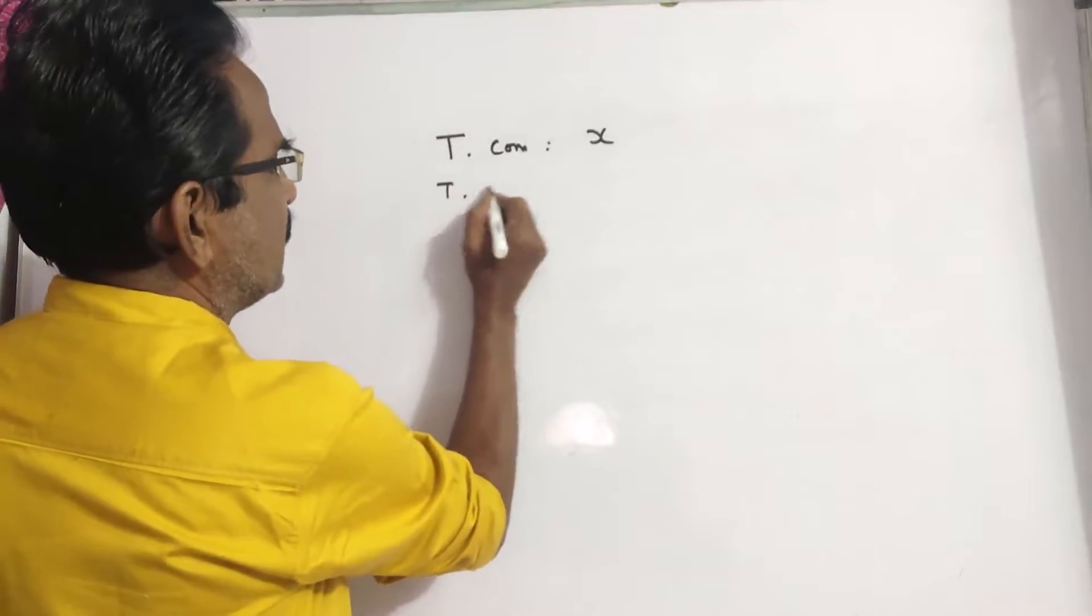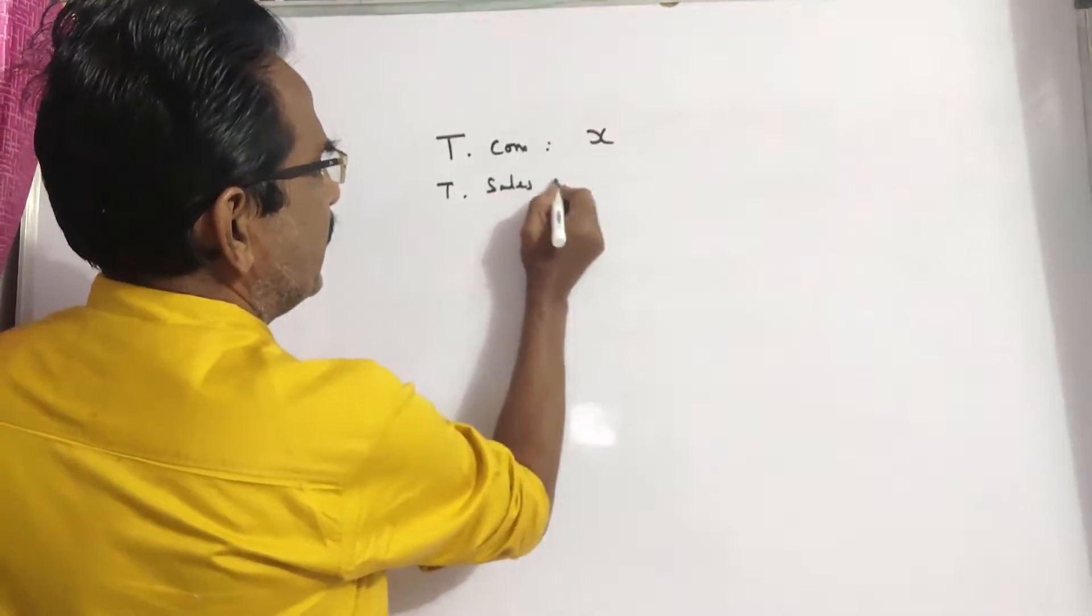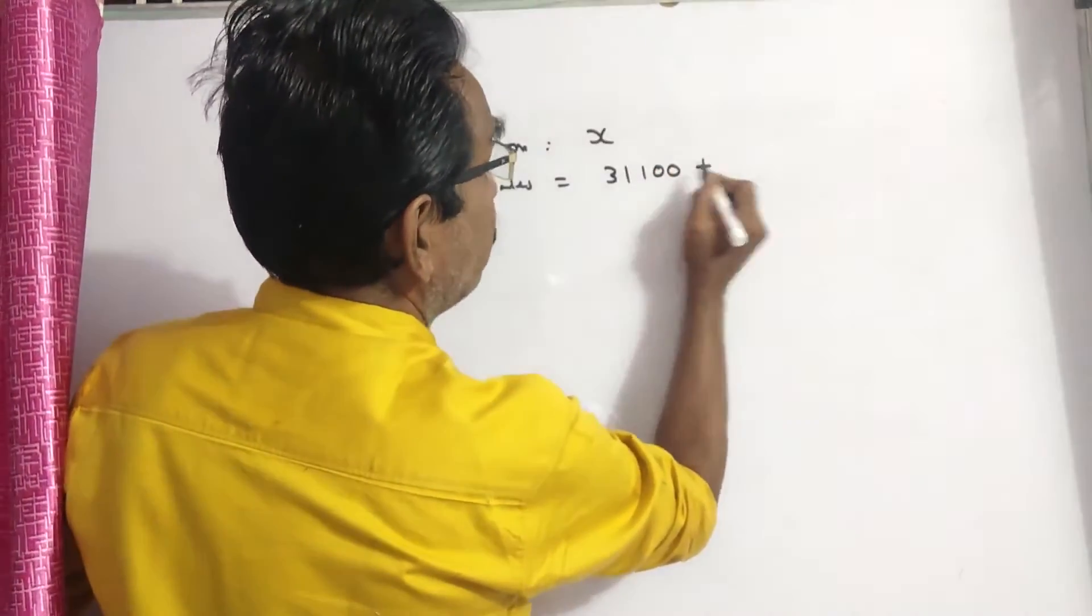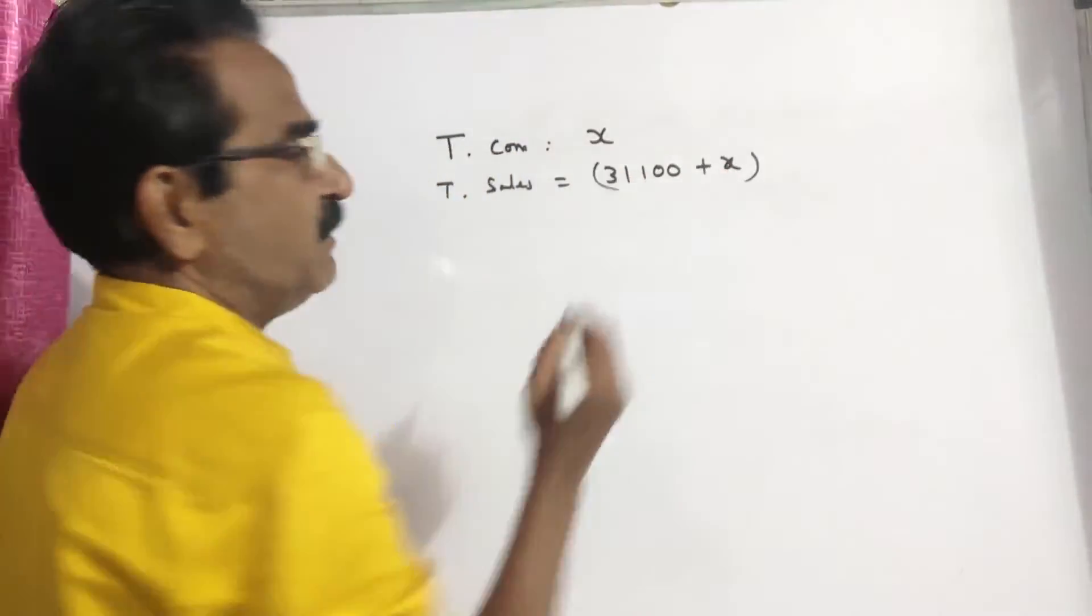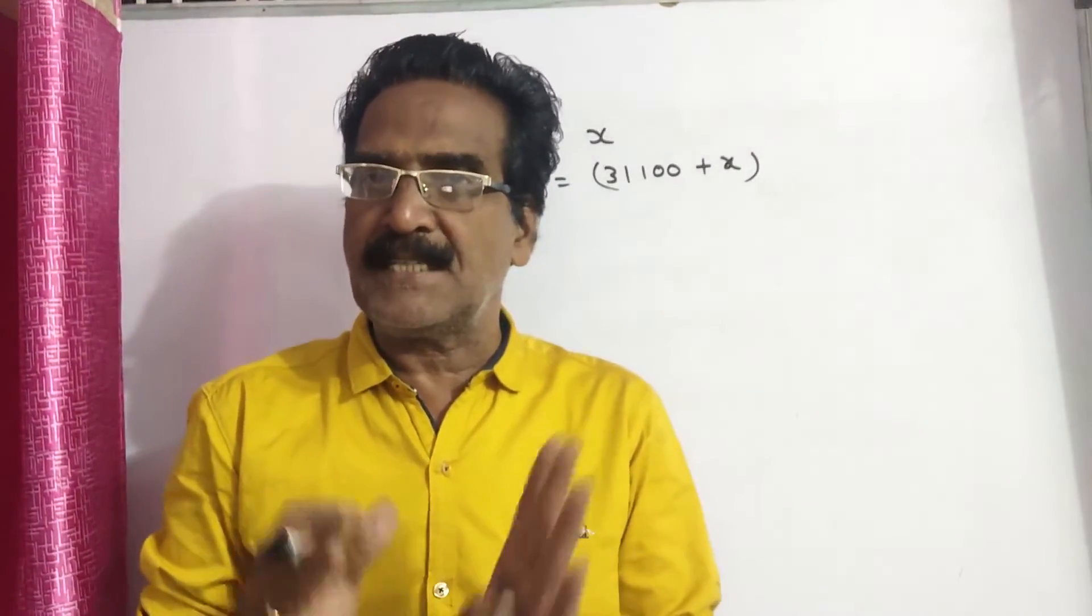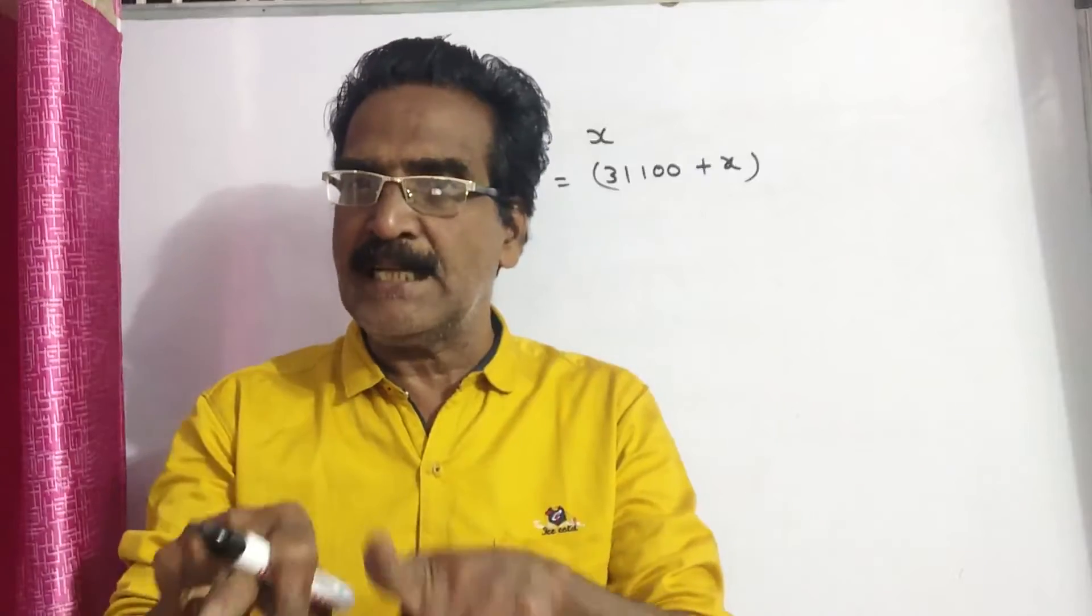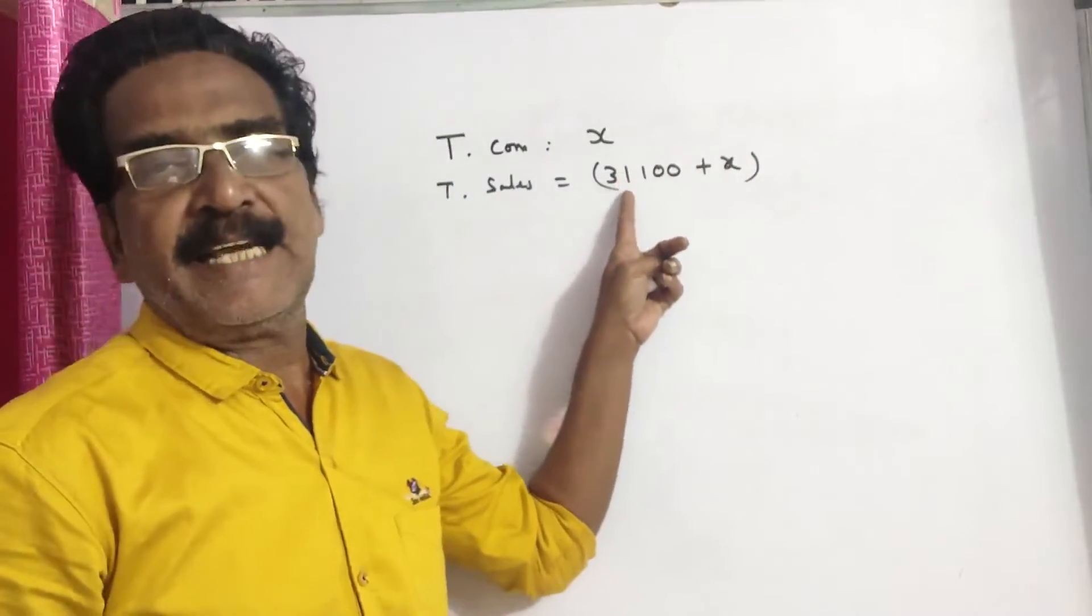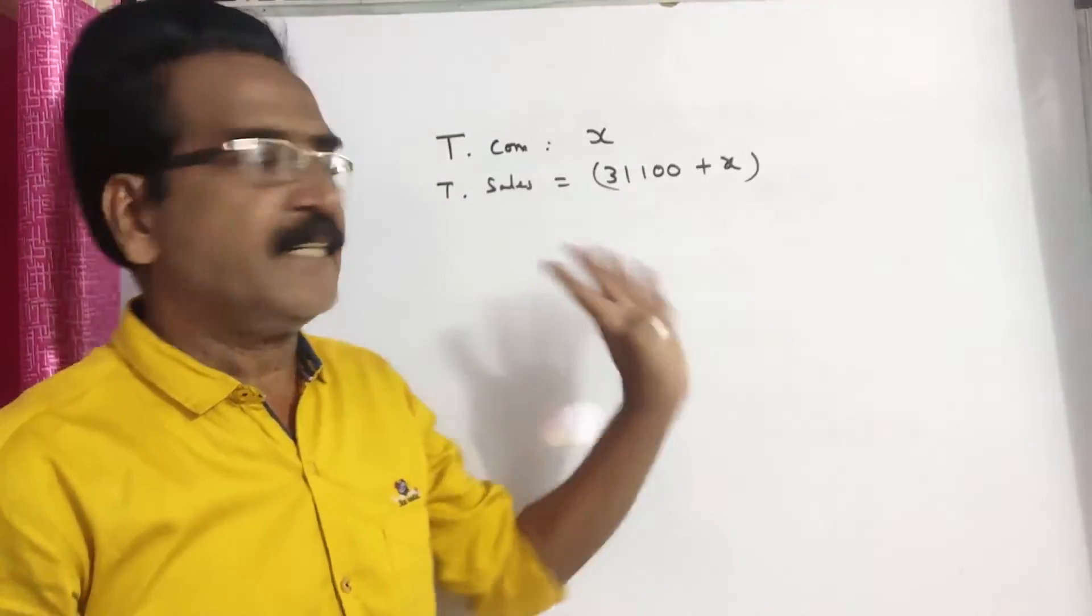What will be the total sales? He has remitted 31,100 after deducting his commission. So, 31,100 plus X must be the total sales. He has remitted his commission X and he has remitted 31,100.